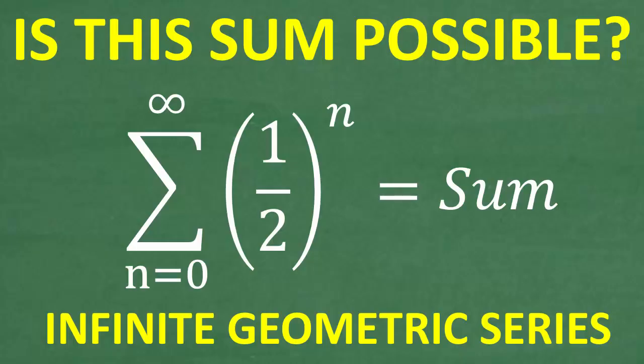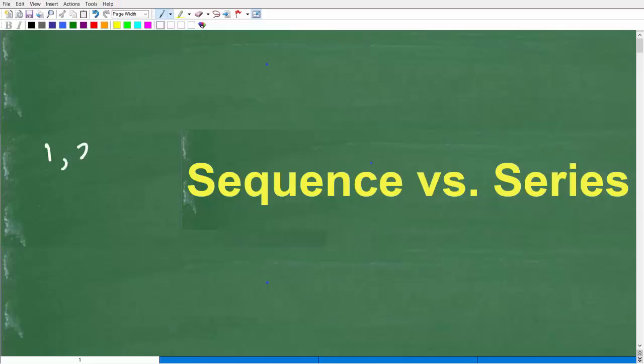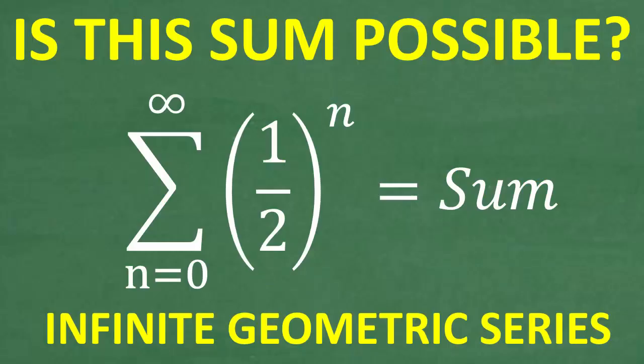I'll explain the difference between a sequence and a series. Here is a sequence of numbers: 1, 2, 3. This pattern continues on and on. A series is when we add the numbers in a sequence. This is a sequence, and this is a series, and this is a huge topic in mathematics.